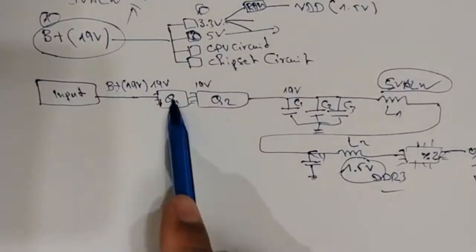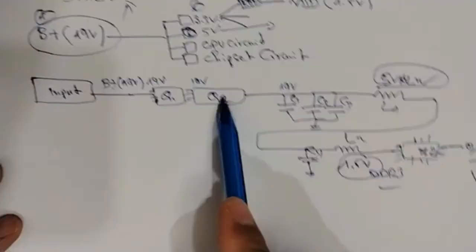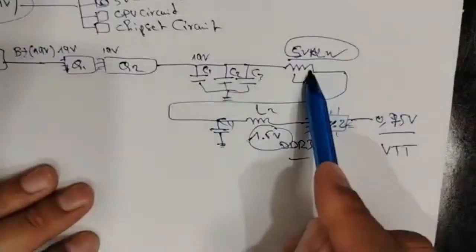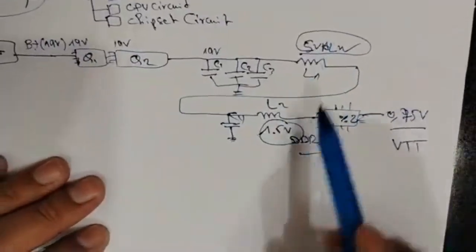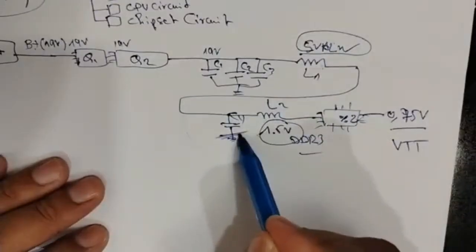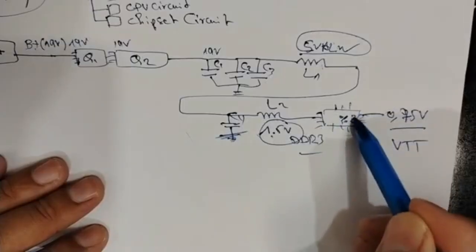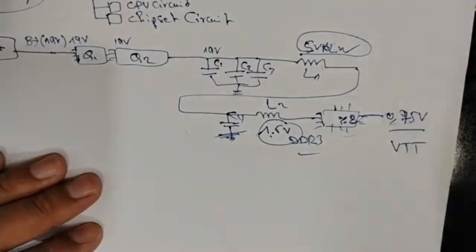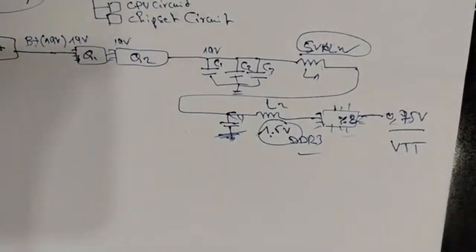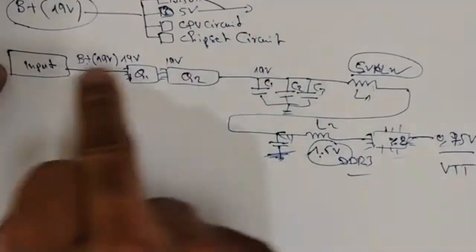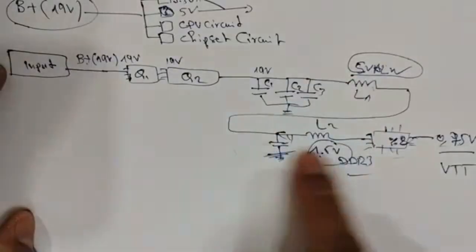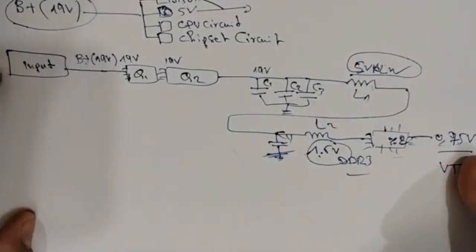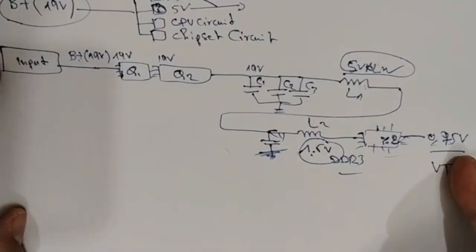From the divider circuit we get 0.75 volts for VTT. So remember this schematic: input → B-plus → first MOSFET → second MOSFET → three ceramic capacitors → inductor → 5 volts → ceramic capacitor → 1.5 volts → IC divider → 0.75 volts for the RAM. I want you to understand this — this is what happens inside any motherboard. I will do this for all circuits.